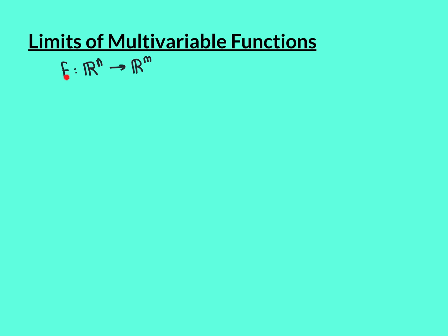Our multivariable function, we'll call it f, is going to be from real n-space, or some subset of real n-space Rn, and it will be mapping into real m-space Rm, where n and m are not necessarily the same. We want to look at both the epsilon-delta definition for limits of multivariable functions, and also the sequence characterisation for limits of multivariable functions.